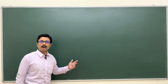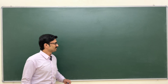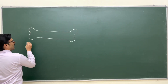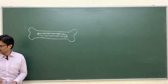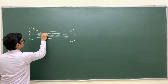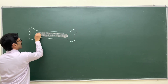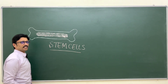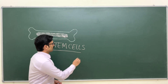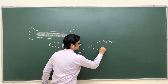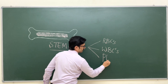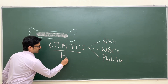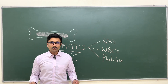Now let us see what is happening in the bone marrow and how different cells are synthesized. Within the bone is a cavity filled with lots of cells that can give rise to different types of blood cells — we call them stem cells. These stem cells are present in the bone marrow and can differentiate into red blood cells, white blood cells, and platelets.